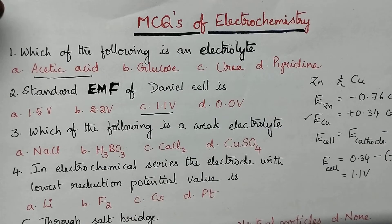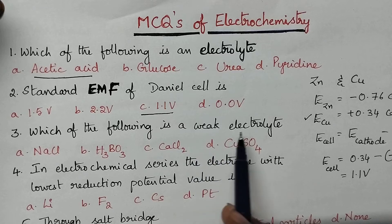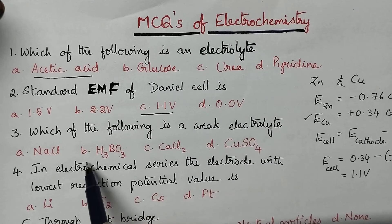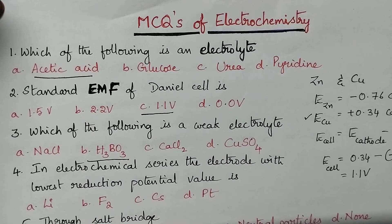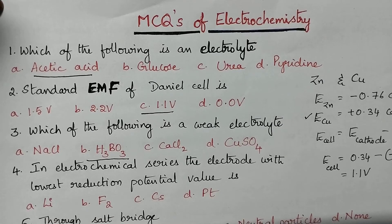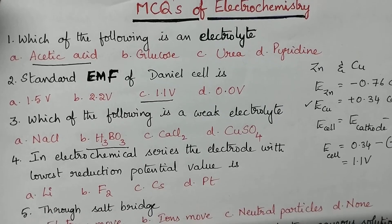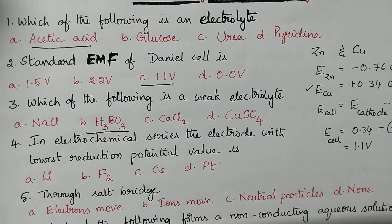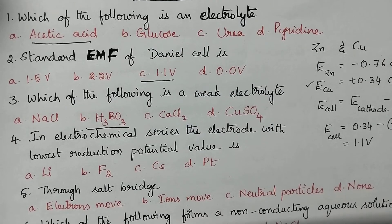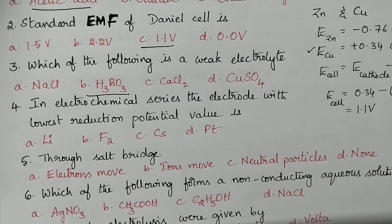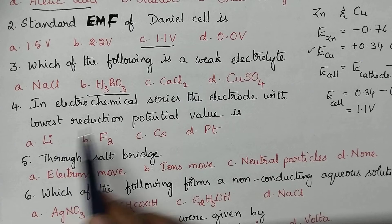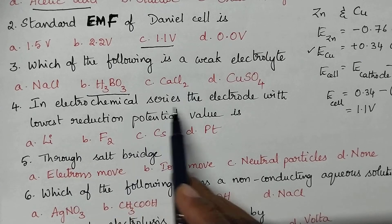Which of the following is a weak electrolyte? Boric acid is the weak electrolyte.